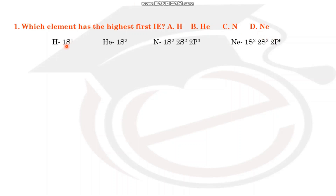Our electron configurations are: hydrogen - 1s1; helium - 1s2; nitrogen - 1s2, 2s2, 2p3; neon - 1s2, 2s2, 2p6.